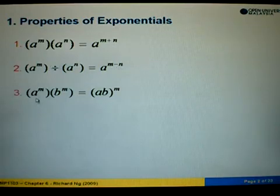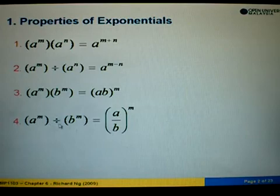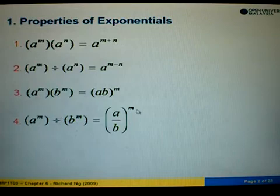Formula number 3: if the bases are different but the powers are the same, then we can take out the power. We write it as (a times b) to the power of m. The same goes for division — when the powers are the same, we can write it as (a divided by b) to the power of m.